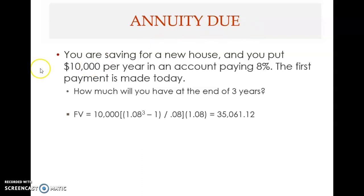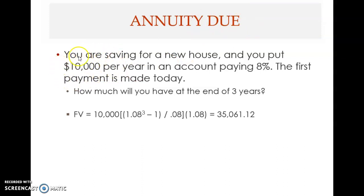Let's look at annuity due. For example, you are saving for a new house and you put $10,000 per year in an account paying 8%. The first payment is made today. Annuity due includes regular payments — $10,000 per year — so this is an annuity. The first payment is made today, which makes this annuity due, not ordinary annuity. In ordinary annuity, the first payment occurs one period after now, but here the first payment occurs now, today. Therefore, this is called annuity due.